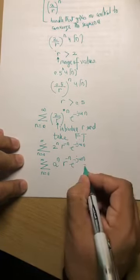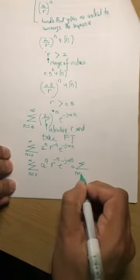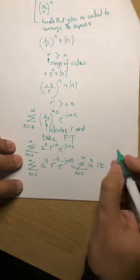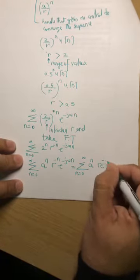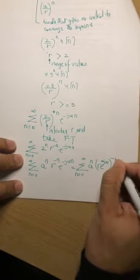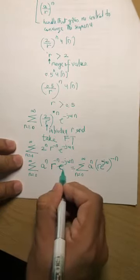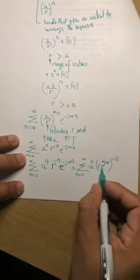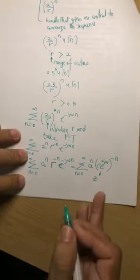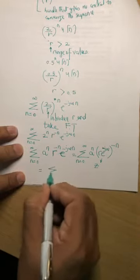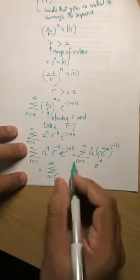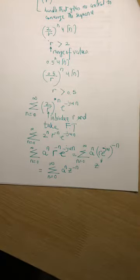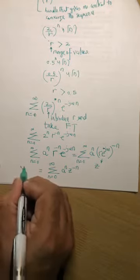The Z-transform is formed by introducing R and then taking the Fourier transform. Bringing R^(-n) inside gives the summation: Σ x[n] * (R * e^(jω))^(-n). We define z = R * e^(jω) as a new complex variable, so the Z-transform becomes X(z) = Σ x[n] * z^(-n) for n from 0 to ∞.